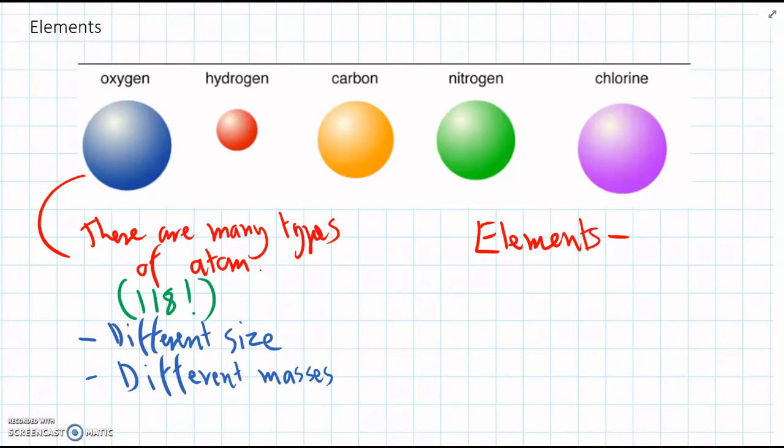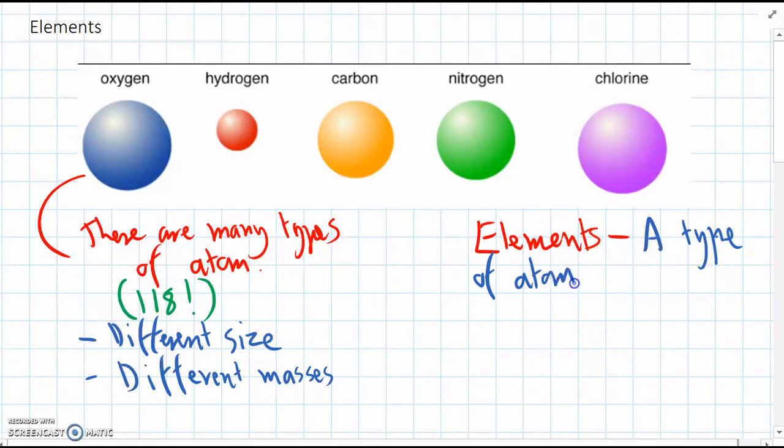Just like for animals, tigers always have particular features compared to humans. It's the same for all oxygen atoms—they have the same features compared to another element. So we can say elements are a type of atom with the same properties or features.